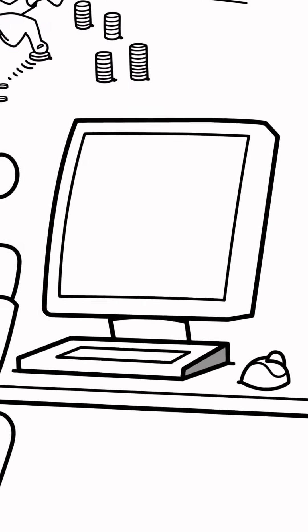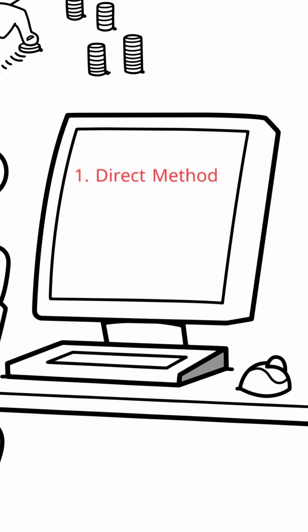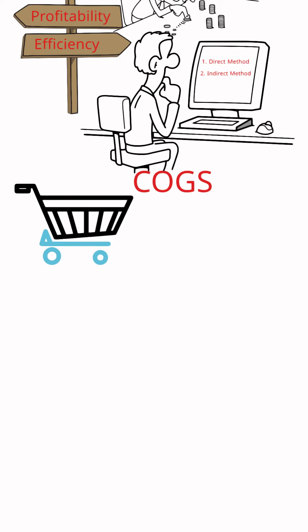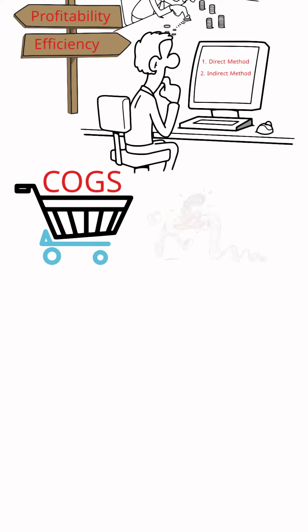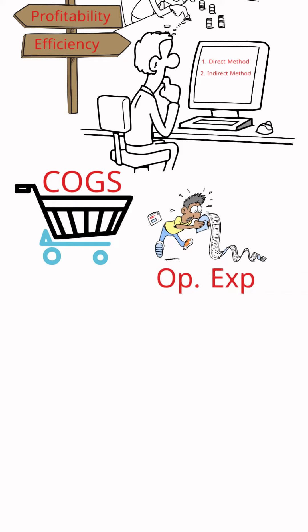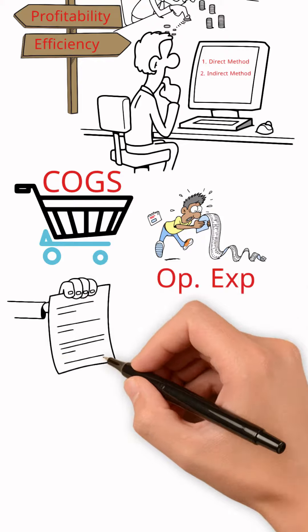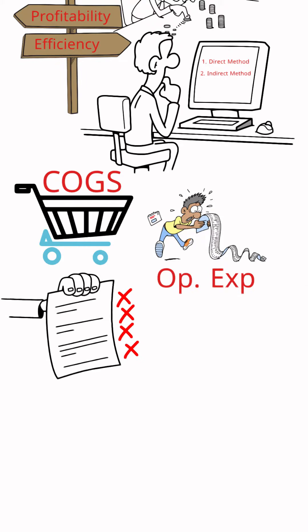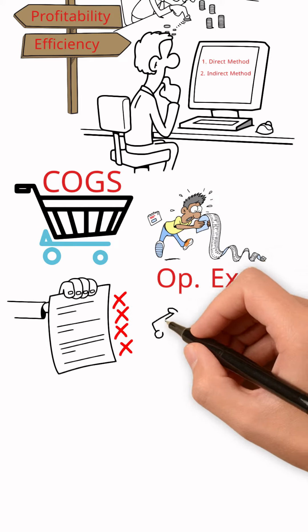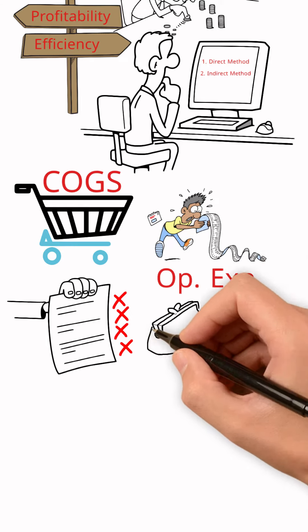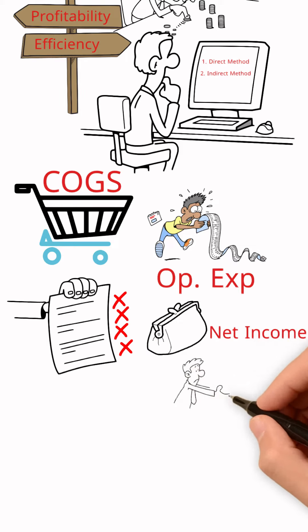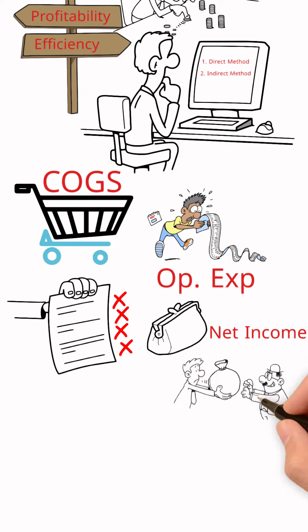Anyone can calculate EBITDA using two methods. The first is the direct method, where you deduct cost of goods sold and operating expenses from total revenue. The second is the indirect method, used when a company does not provide proper bifurcation of operating expenses and cost of goods sold — calculated as net income plus interest plus tax plus depreciation plus amortization.